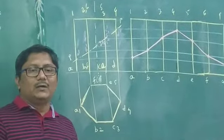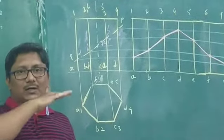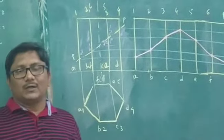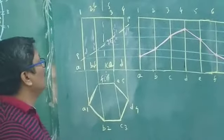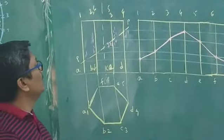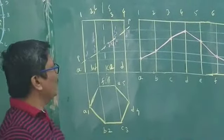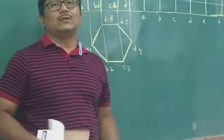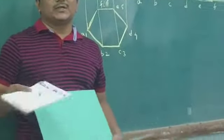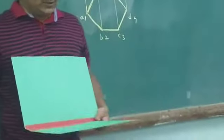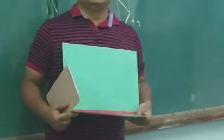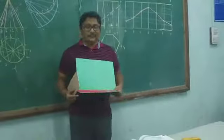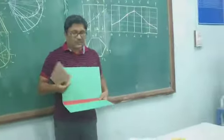When we cut the hexagonal prism, how we can see the development — that is very important. So before that, we will see some orthogonal projections related to two planes: horizontal and vertical plane. Basically, these are the two planes.